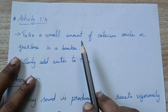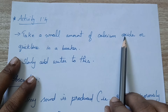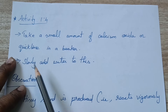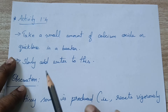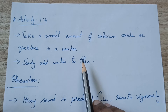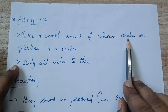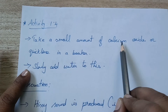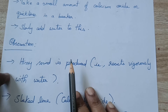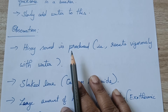What is Activity 1.4? Take a small amount of calcium oxide, or quicklime, in a beaker and slowly add water to it. Calcium oxide's common name is quicklime. What you will observe is: when you add calcium oxide to water, it vigorously reacts with the water.